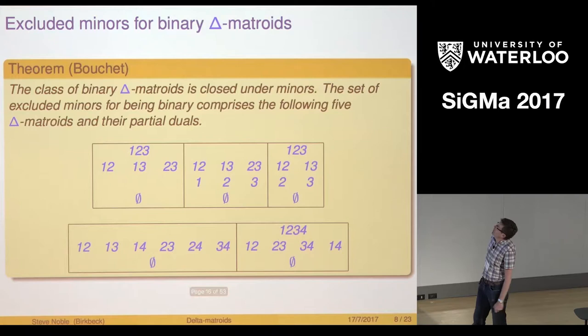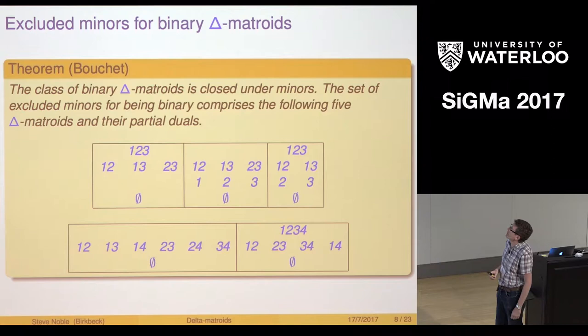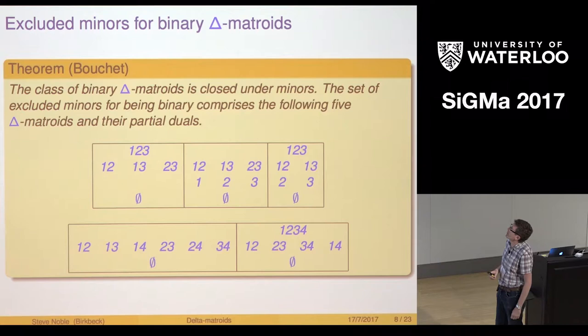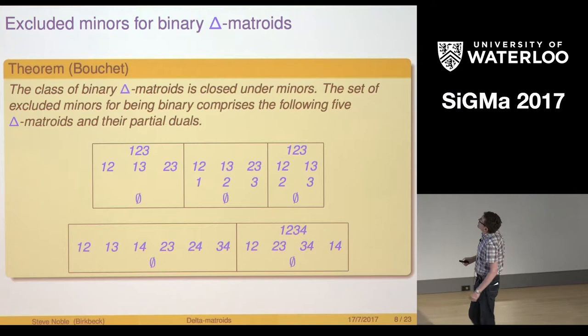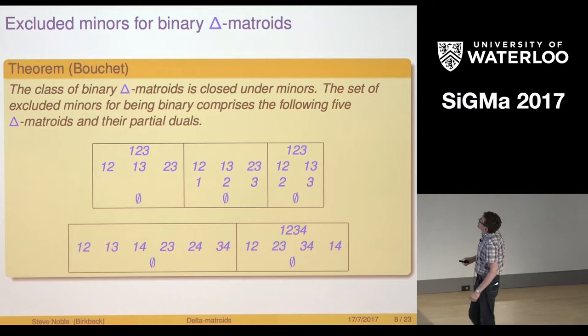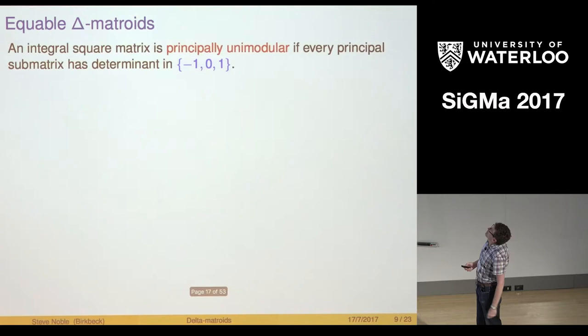Something Boucher proved was he managed to find the excluded minors for binary Delta Matroids and up to partial duals there are five of them. So the excluded minors are all these Delta Matroids and their partial duals. This generalizes Tutte's characterization of binary Matroids. This proof is quite similar to Tutte's proof but it's also in some ways I think actually a little bit simpler and easier to see where it comes from, though Tutte's proof is probably more elegant.